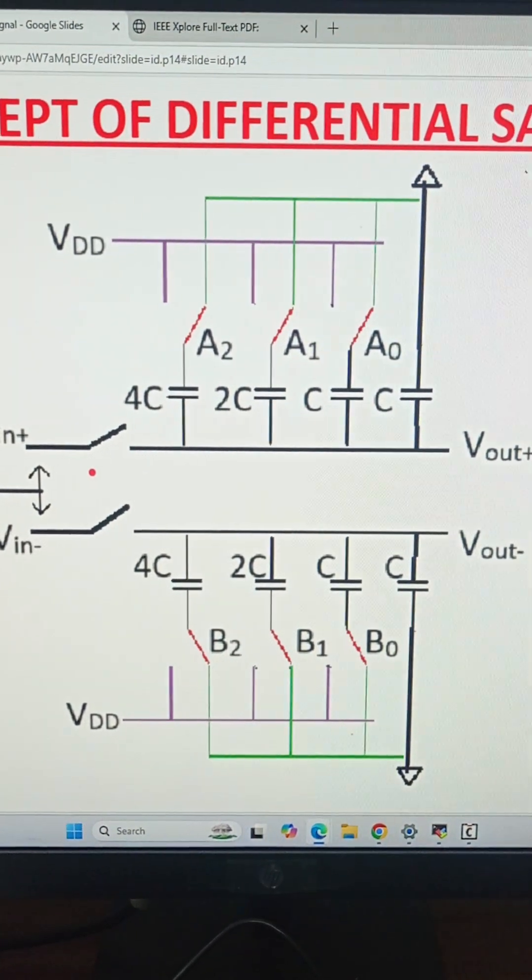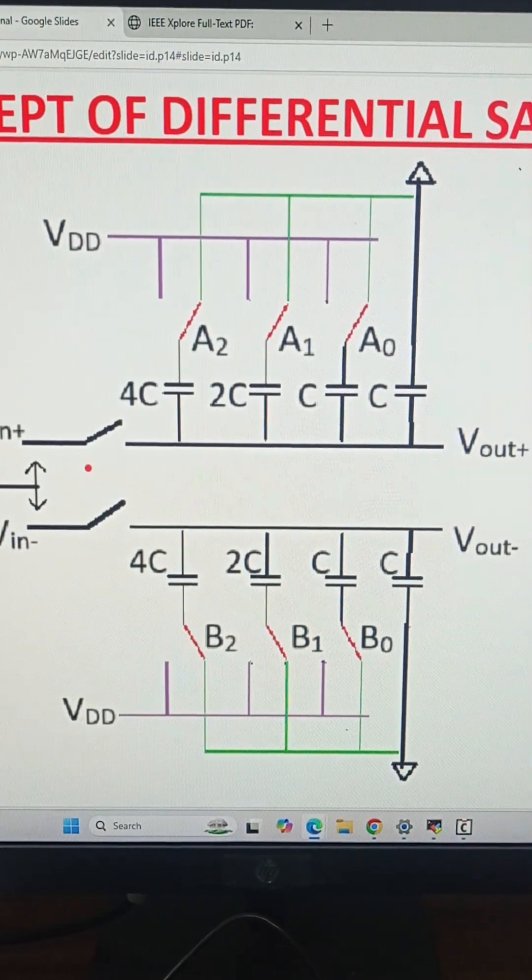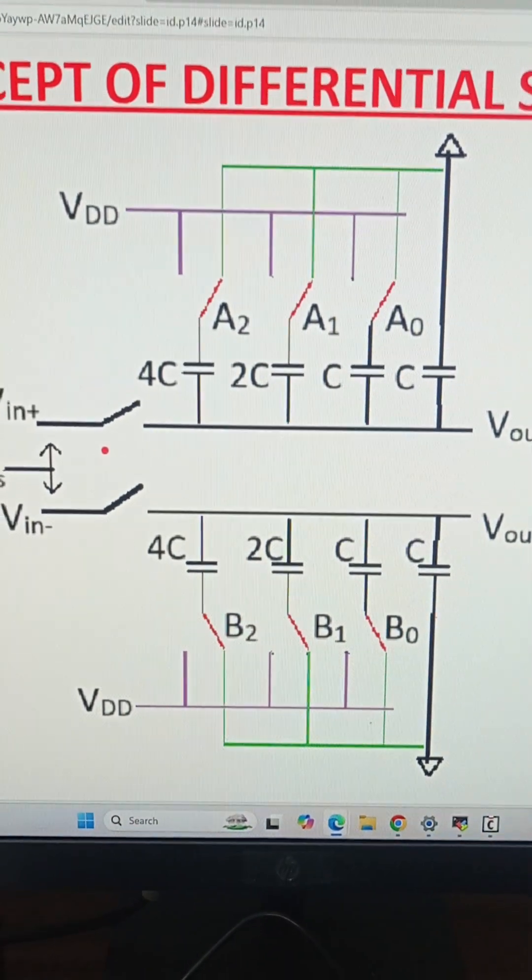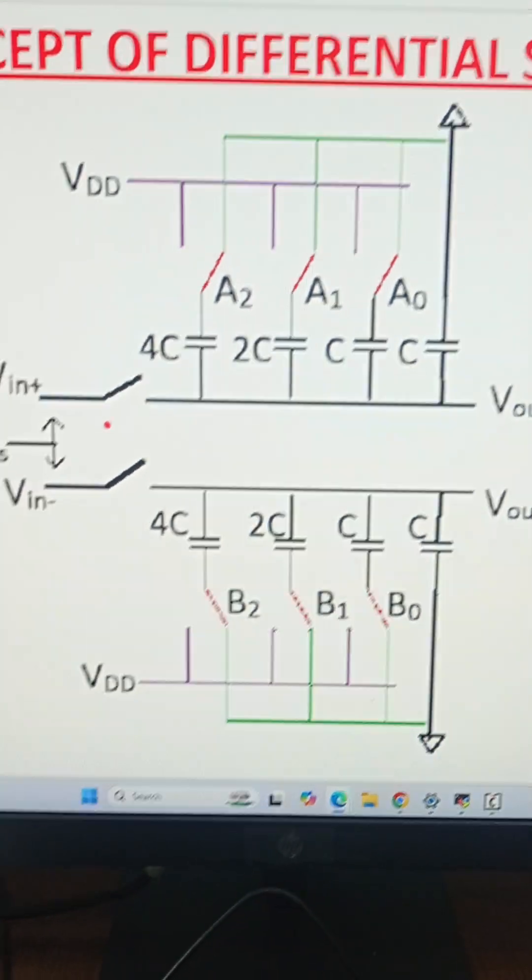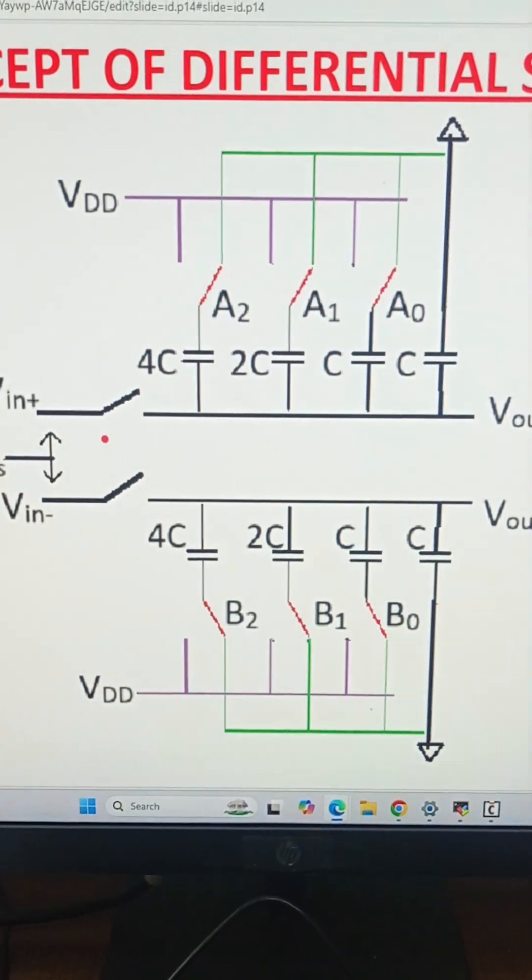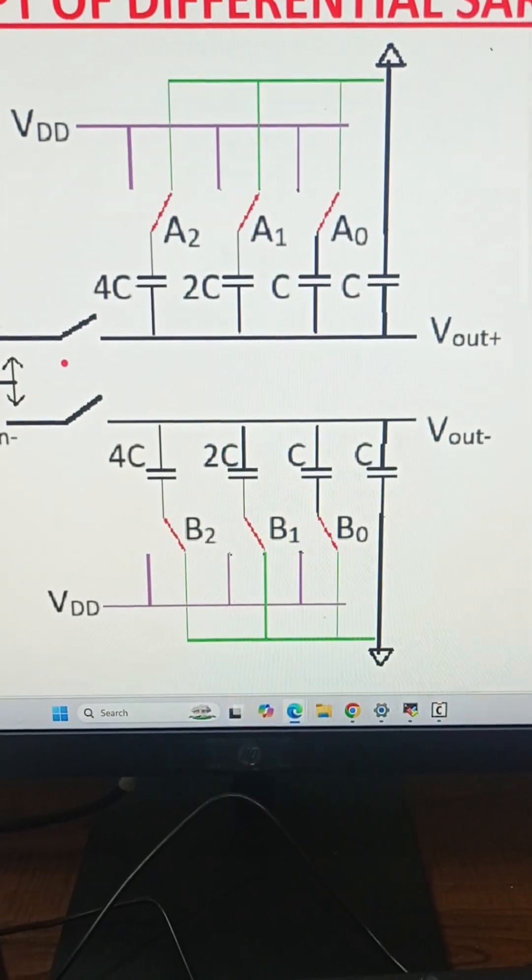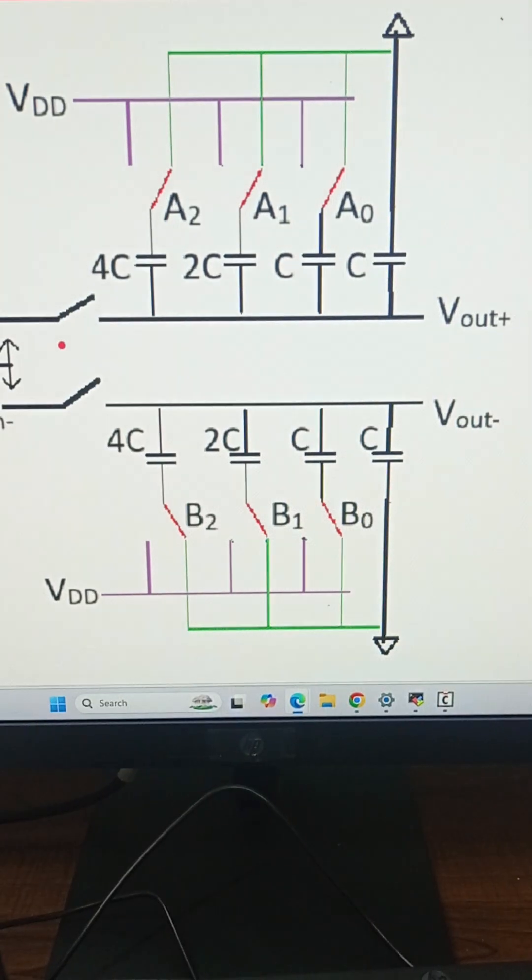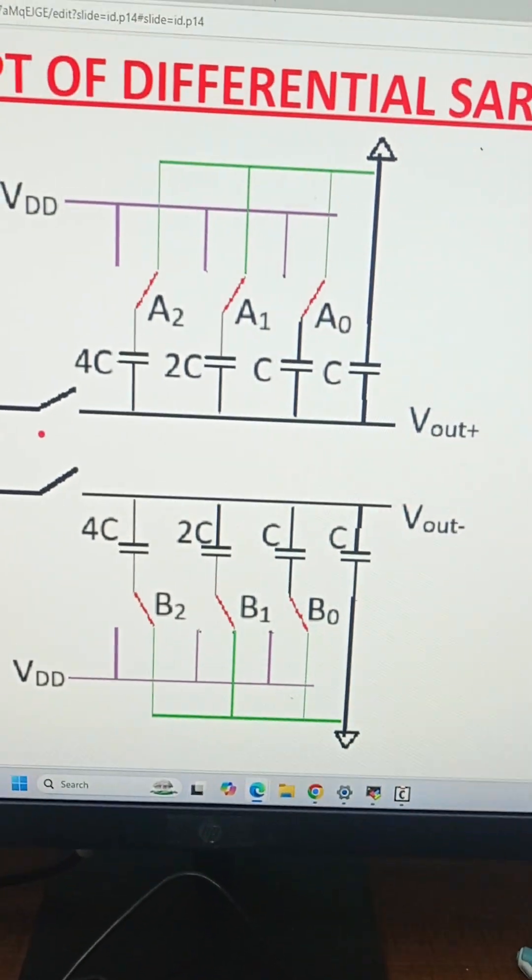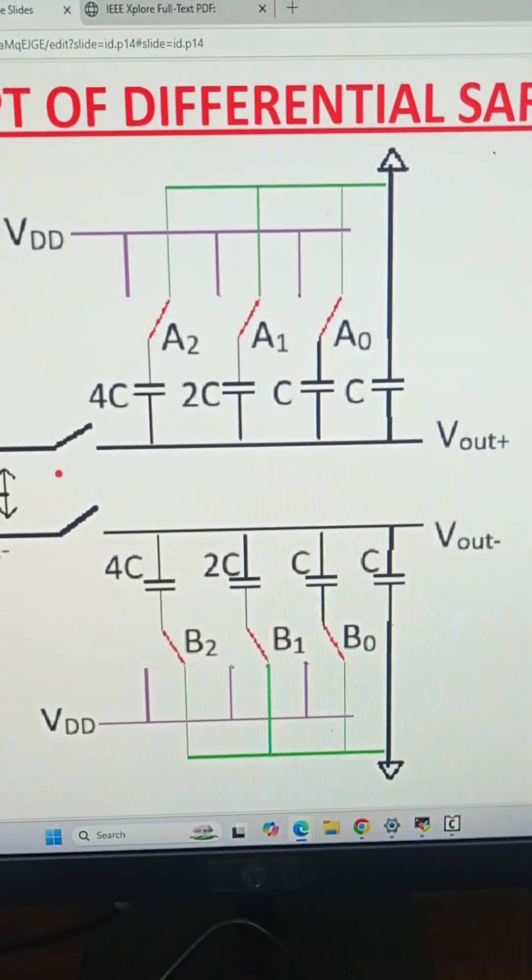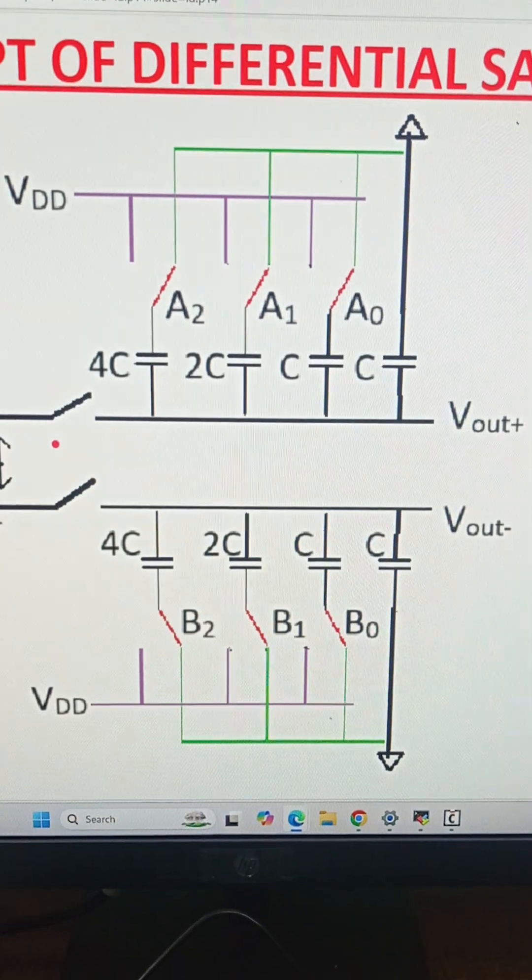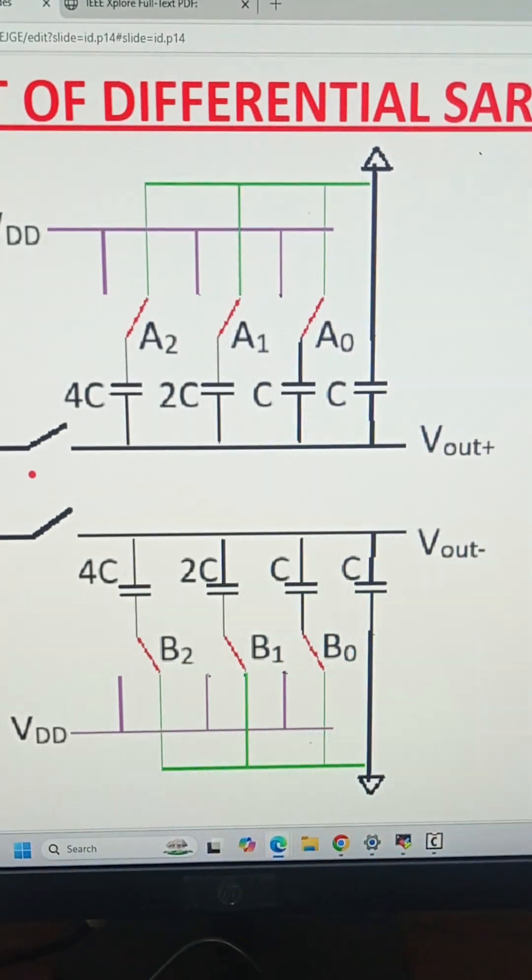The first bit will be resolved as 1, and due to monotonic switching the bit B2 will be switched from ground to V_DD. Switch B2 is now connected to V_DD. The charge redistribution will take place, increasing V_out- by 0.5 volts.